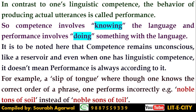Competence remains unconscious and abstract, like a reservoir. Even when one has linguistic competence, performance does not always match it. Competence is an idealized concept that can never be actualized one hundred percent. A slip of tongue — in the linguistic sense — occurs when though we know the correct order of a phrase, we perform incorrectly while speaking, perhaps due to stress. For example, instead of saying 'noble sons of toil' we say 'noble tons of soil.' Even native speakers with full competency can perform differently because of many factors.